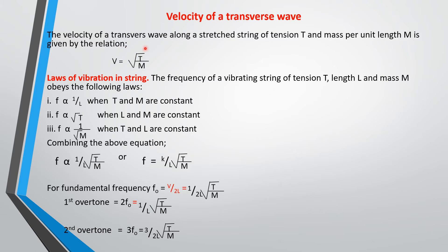The velocity of a transverse wave along a stretched string of tension T and mass per unit length m is given by V equals square root of (T/m). This means the velocity is proportional to the square root of the tension and inversely proportional to the square root of the mass per unit length. This now leads us to the laws of vibration in strings.